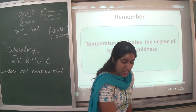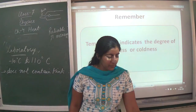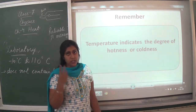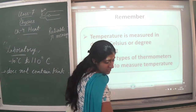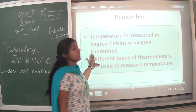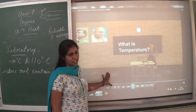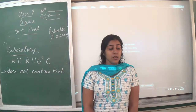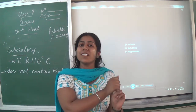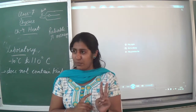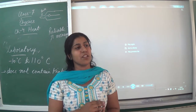Today we have learnt that temperature indicates the degree of hotness as well as coldness. We learnt about three types of thermometer: the clinical thermometer — used to measure body temperature; the laboratory thermometer — used to measure the temperature of liquids; and the digital thermometer — a mechanical alternative to the clinical thermometer. Temperature is measured in degree Celsius or degree Fahrenheit.